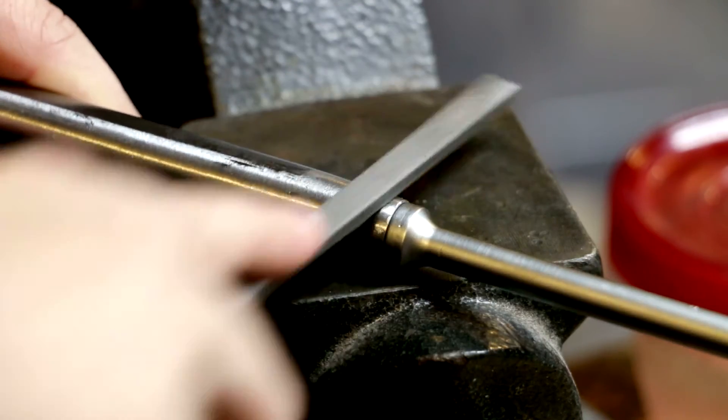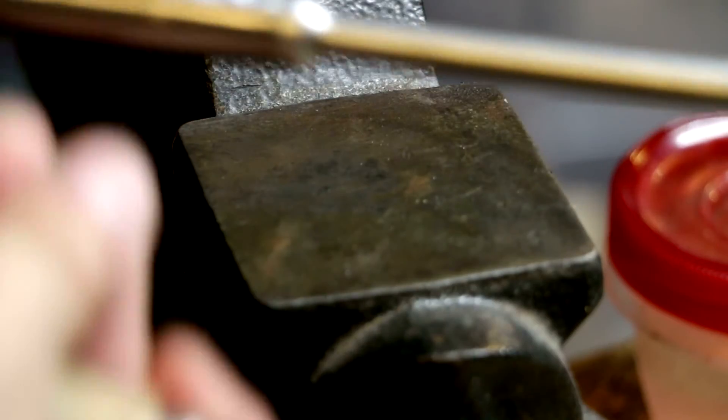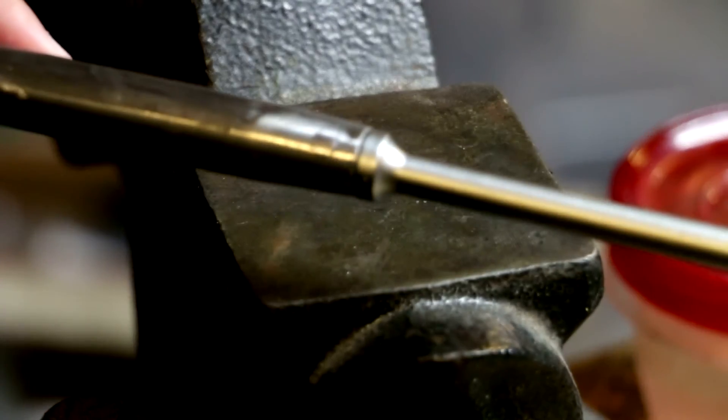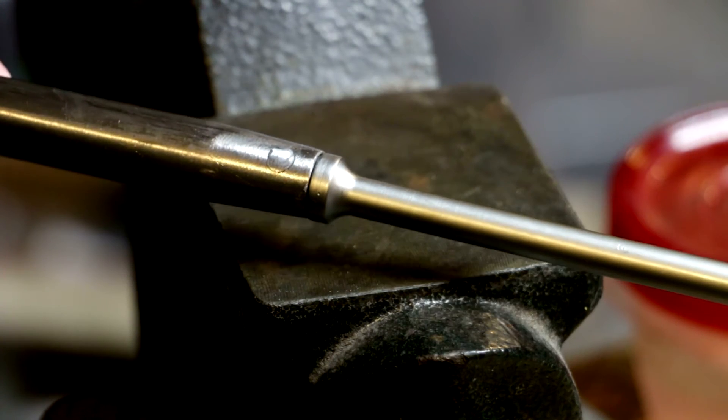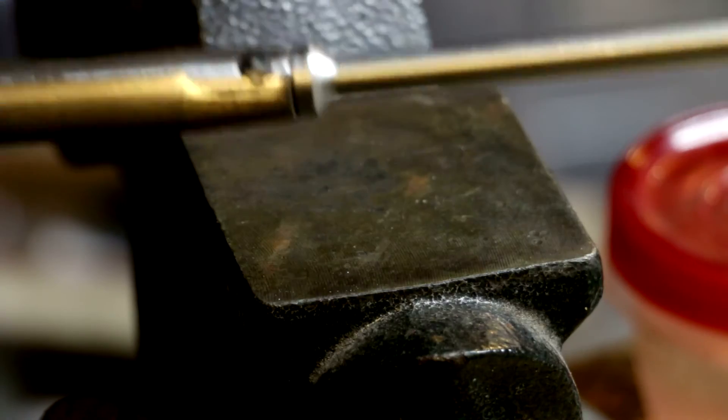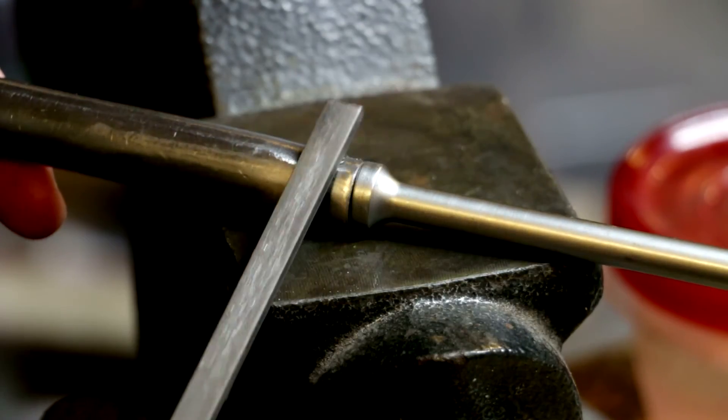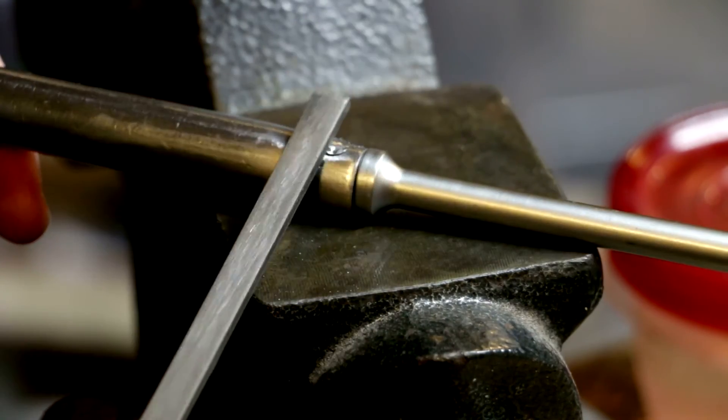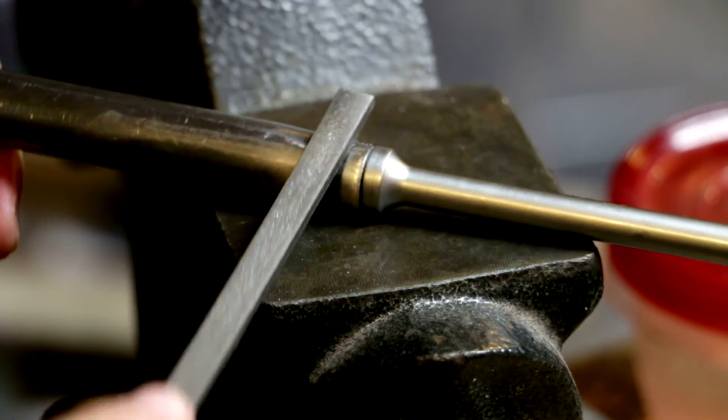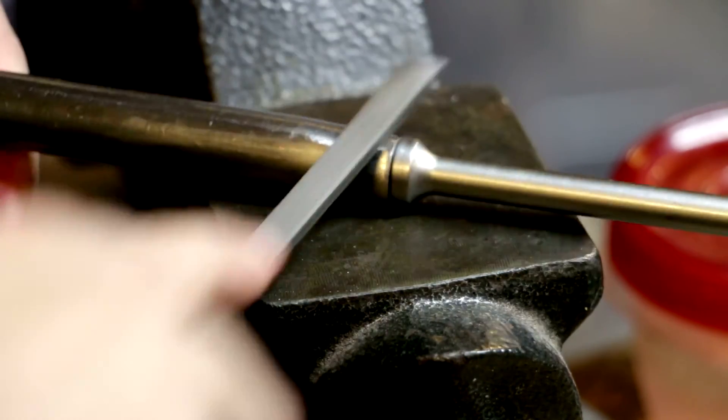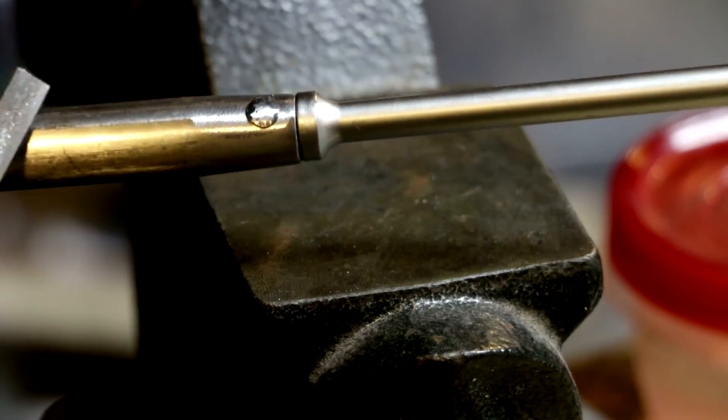At some point I'm going to put this in the vise, it just makes it easier to hold, but you just keep doing that and you can already see that it's dressing over just fine. Same with the other side, we'll just keep doing that until it comes flush with the surface of the carrier.